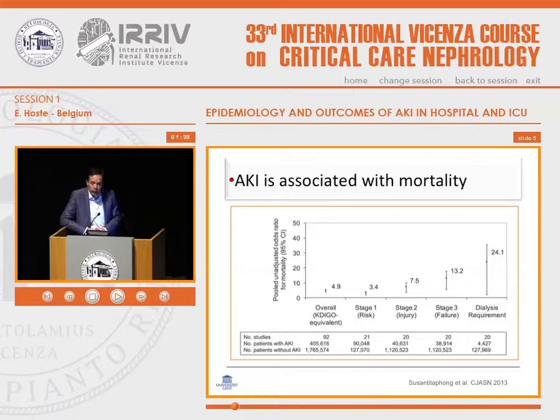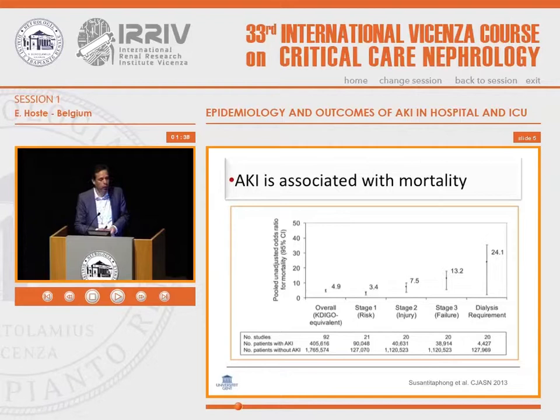What's also very clear, and it's also demonstrated in the previous talk, is that increasing severity of acute kidney injury is associated with increased risk for mortality. Stage 1 is already associated with a higher risk for mortality compared to no AKI patients, and stage 2 even more, and stage 3 even more. So that's very clear.